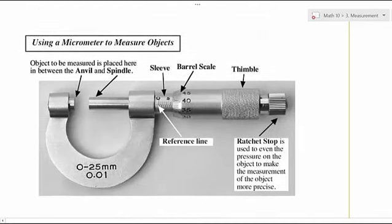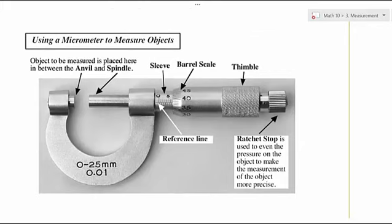The first thing to understand whenever you're using like a micrometer or let's say the vernier caliper is that you often have like a coarse measurement and then the fine measurement, and you have to add those two things together.